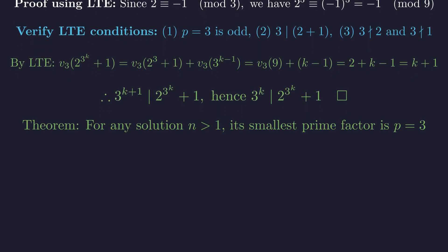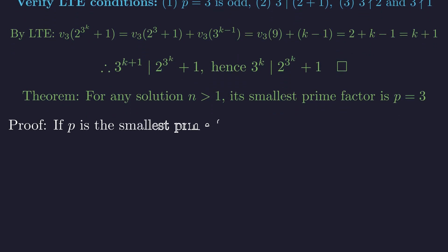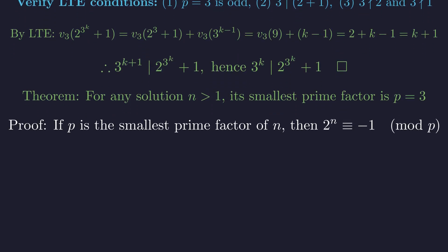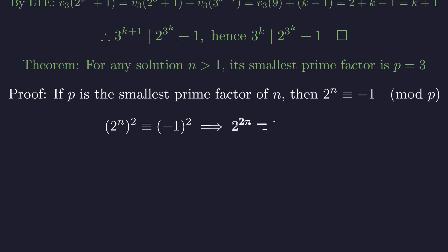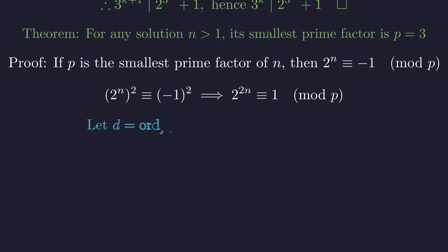Through a rigorous analysis of multiplicative order, we can prove that the smallest prime factor of any solution n greater than 1 must be exactly 3. This result is ironclad. Since p divides n and n divides 2 to the n plus 1, we get that 2 to the n is congruent to negative 1 modulo p. By squaring both sides of this congruence, we find that 2 to the power of 2 times n is congruent to 1 modulo p. Let d be the multiplicative order of 2 modulo p. Since 2 to the 2n is congruent to 1, d must divide 2n. By Fermat's little theorem, d also divides p minus 1.